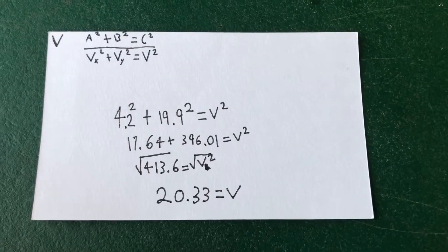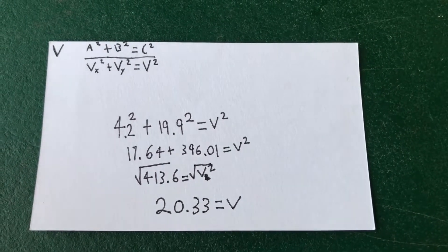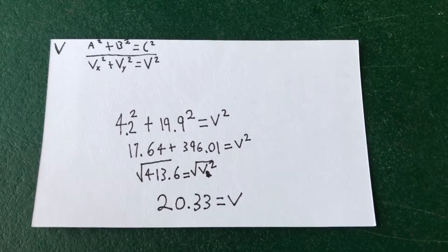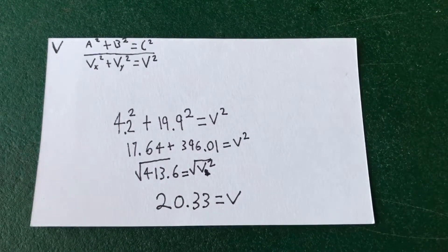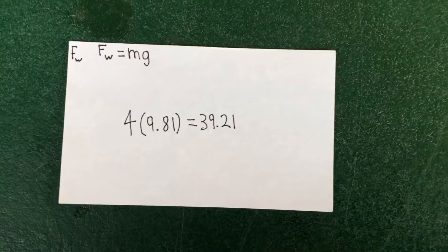To find the resultant velocity, we used the equation Vx squared plus Vy squared equals V squared. Plugging in our velocities, 4.2 meters per second and 19.9 meters per second, we got a resultant velocity of 20.33 meters per second.